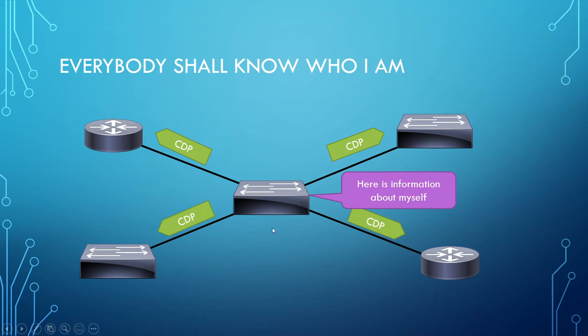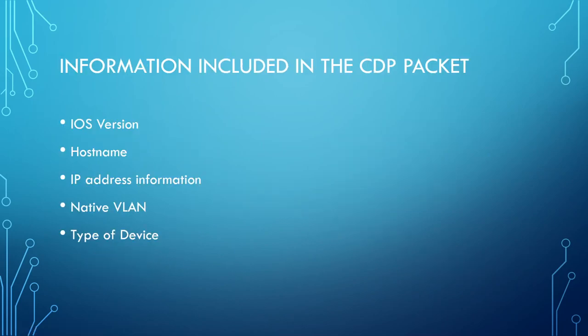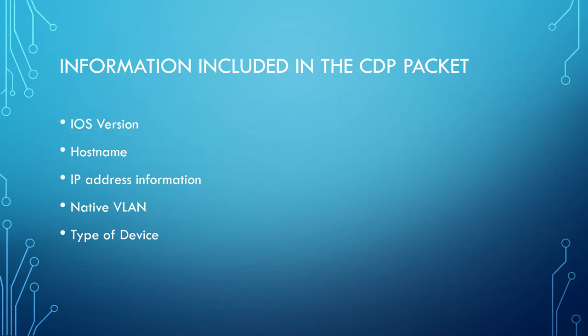For CDP to work and for a device to actually transmit CDP packets, CDP has to be enabled on the switch and has to be enabled on those interfaces. The device will just be telling neighboring devices information about itself. Some of the information included in the CDP packet includes the IOS version, hostname, IP address, native VLAN, type of device such as switch or router, and other useful information.